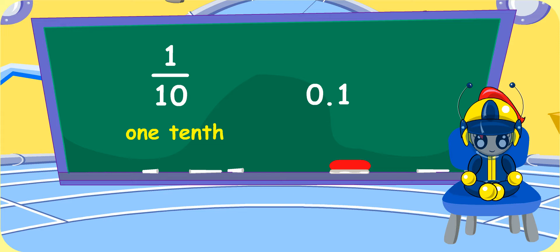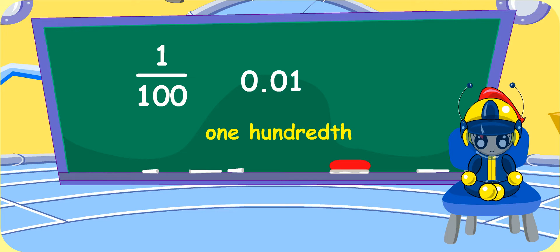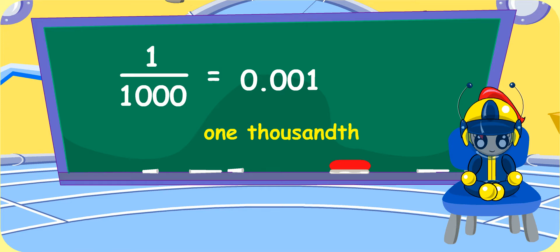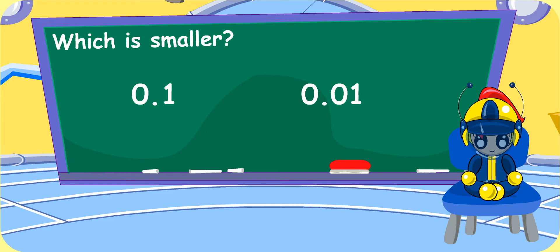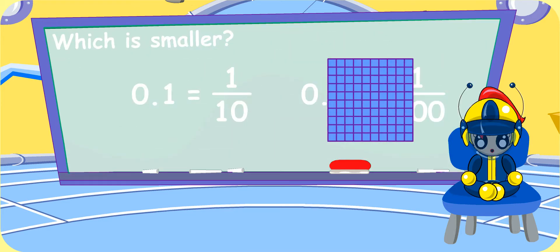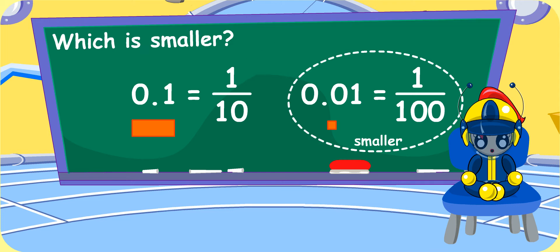Oh, I know. 0.1 is equal to 1 over 10. Brilliant. What about 0.01? 0.01 is 1 hundredth. When I write 100 in fraction, it is 1 over 100. Thus, 0.01 is equal to 1 over 100. And 0.001 is 1 thousandth, the same as 1 over 1,000. Now, can you tell me which is smaller? 0.1 or 0.01? 0.1 is the same as 1 over 10. 0.01 is the same as 1 over 100. 1 out of 100 is a smaller portion than 1 out of 10. Thus, 0.01 should be smaller than 0.1. That's correct.